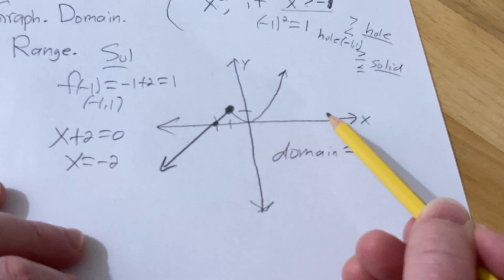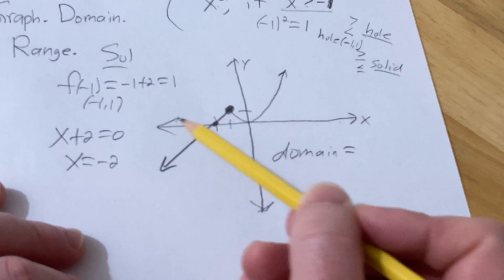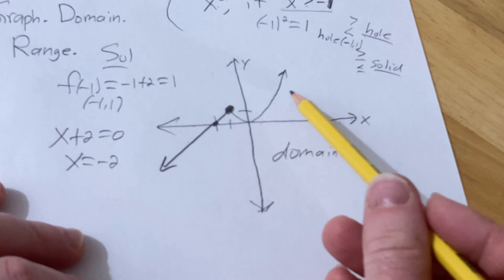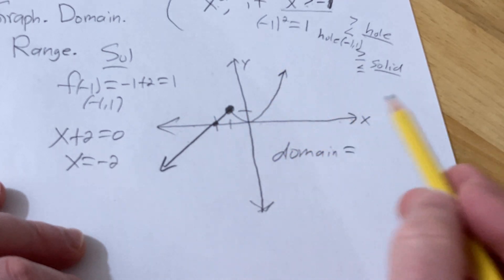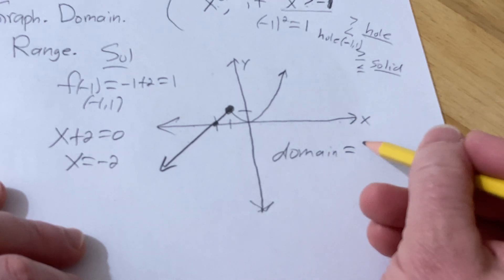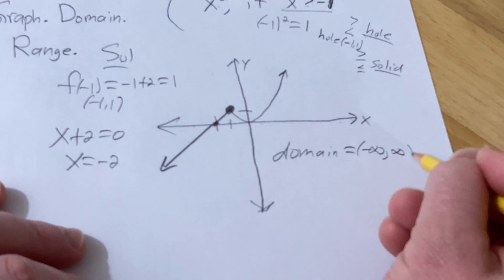I can pick any x-value here on the x-axis, and it's going to give rise to some y-value on this graph. Therefore, the domain is all real numbers, so negative infinity to infinity.